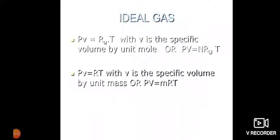PV equals Ru T, with V being the specific volume per unit mole, or PV equals n Ru T. PV equals RT with V being the specific volume per unit mass, or PV equals mRT.